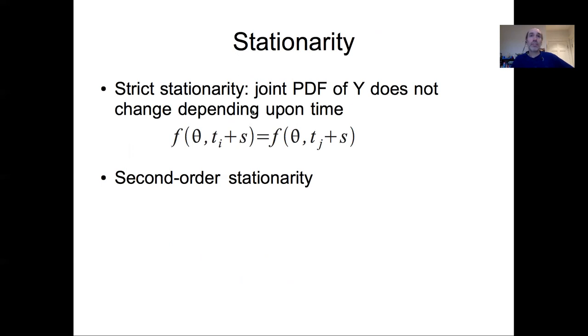So strict stationarity is when the joint probability distribution of Y, which again is a random variable distributed according to f, does not change depending on time. So f at some t sub i plus s is going to be the same as f at time t sub j plus s. So relative to some point in the future s, the joint probability distribution does not change between these two times. Now that's a pretty high bar because it requires knowledge of the full joint PDF of Y at all times.